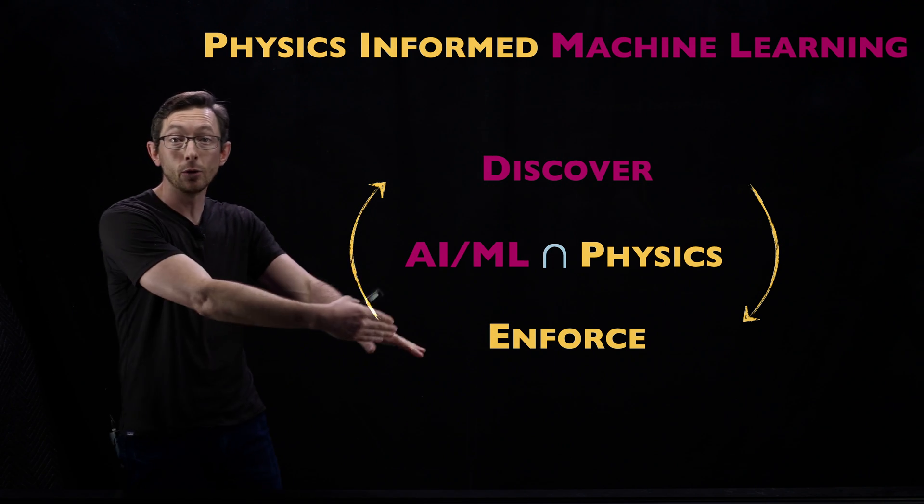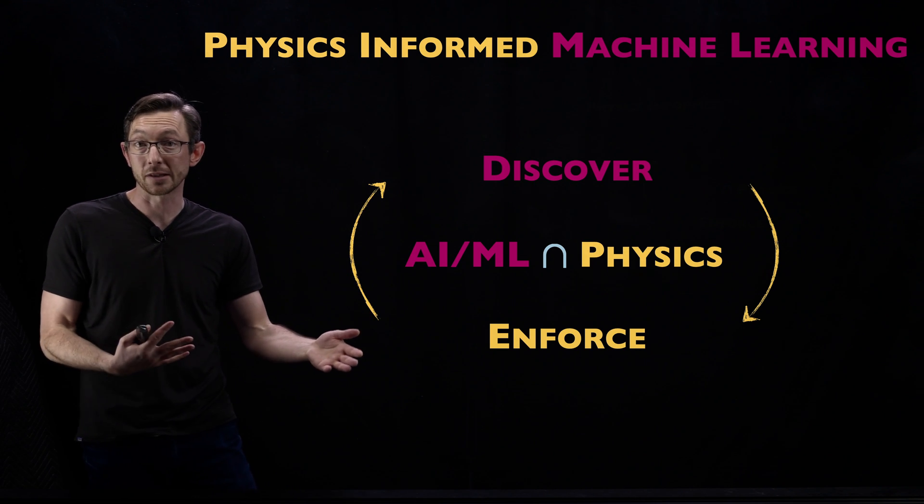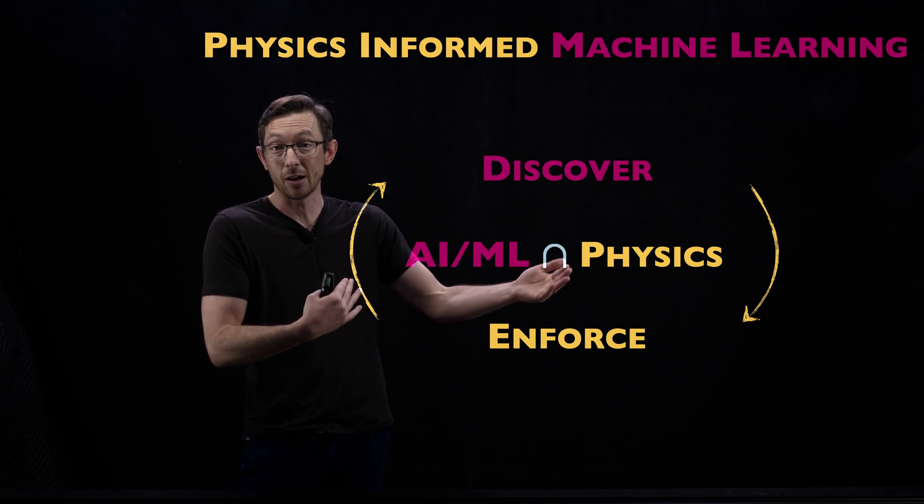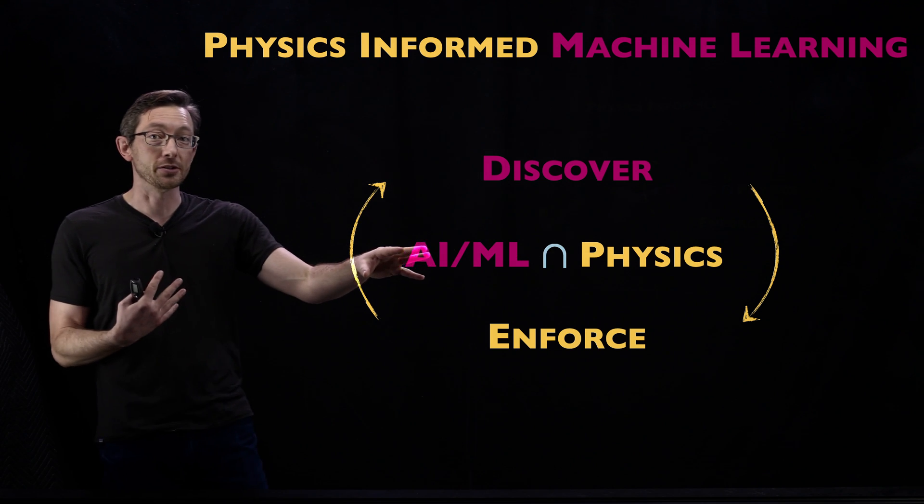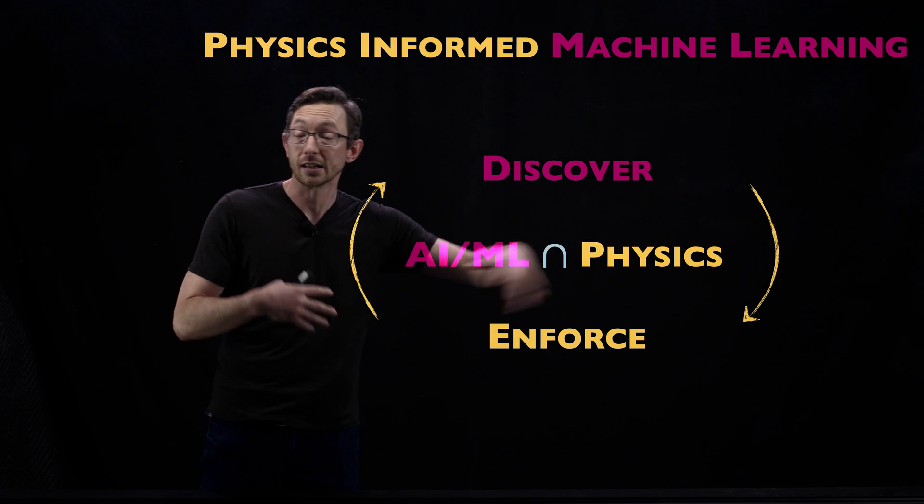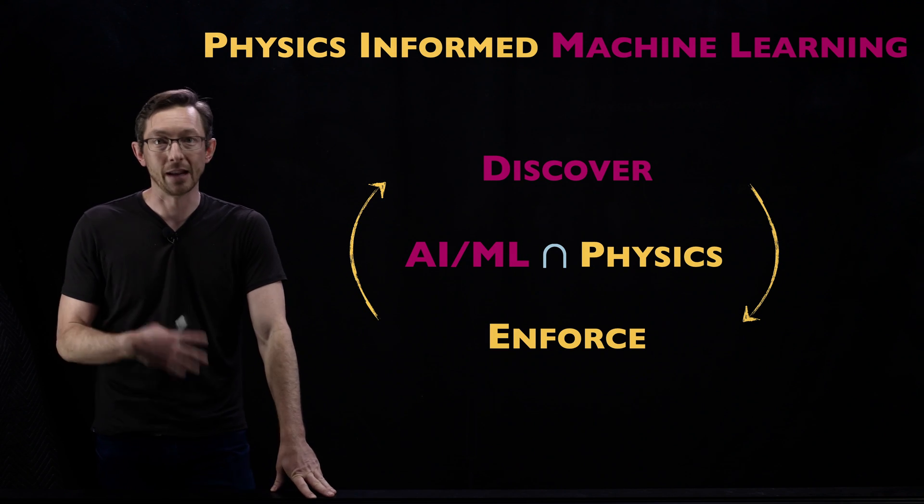Often those models will generalize better, which is really important when we're doing engineering design. If I want to design a new wing that's different than any wing I've ever seen before and I want to use machine learning in that process, I hope that those models generalize better and incorporate the known physics we know about fluid dynamics.